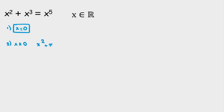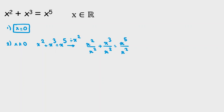Our main equation is x squared plus x cubed equal to x to the 5. We divide both sides by x squared. By the power rule, a to the n over a to the m equals a to the n minus m. So x squared over x squared is 1, and x cubed over x squared is x to the 3 minus 2, which is x to the 1.